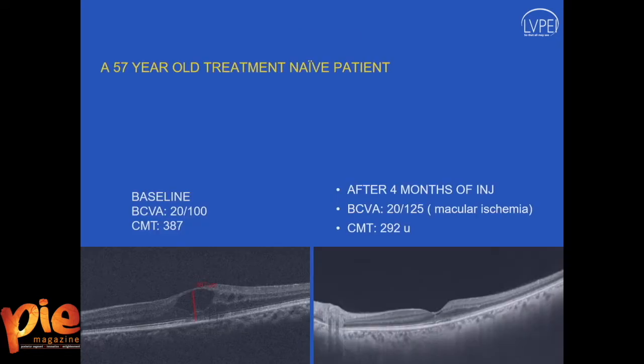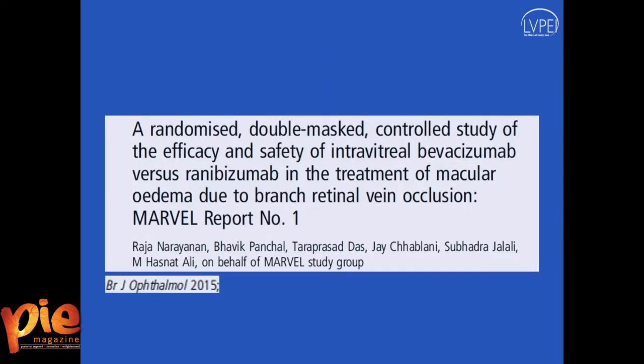This is another patient who had a baseline vision of 20/100. With one injection, this patient had only a four-month follow-up — she didn't come back beyond that. But at four months there was significantly improved OCT, although there was some amount of ischemia because of which the vision did not improve significantly.